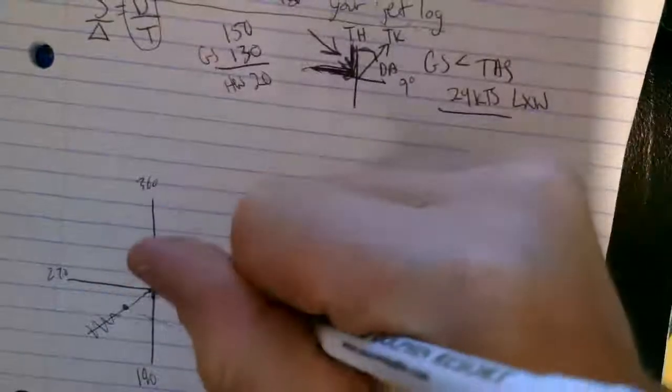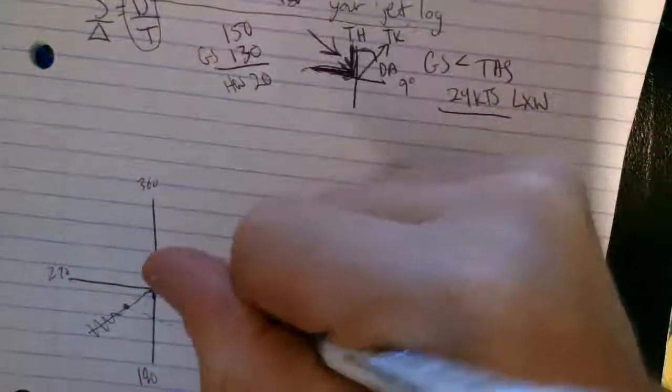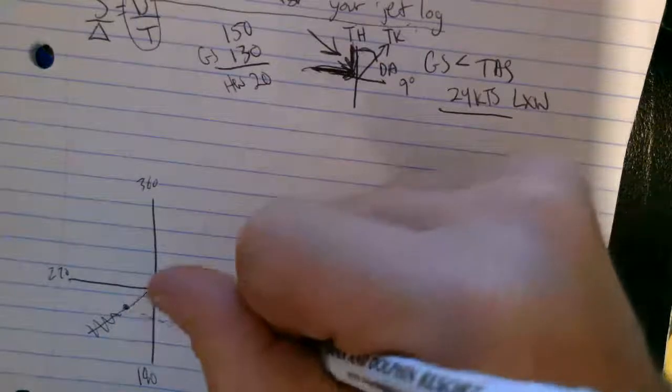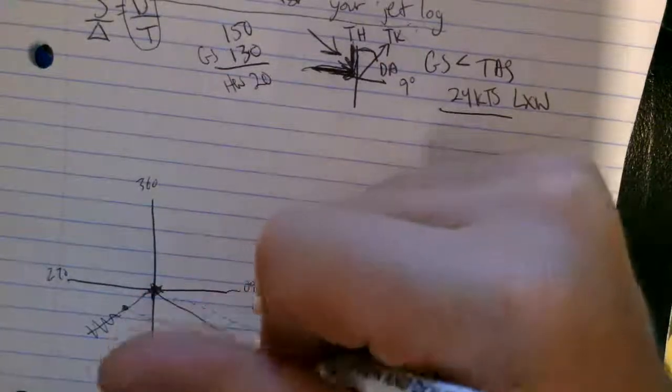So you're looking at between 0, 9, 0 and like 1, 2, 0, something like that. So maybe it's like 1, 0, 0. All right. So that's the course that you're probably going to get.